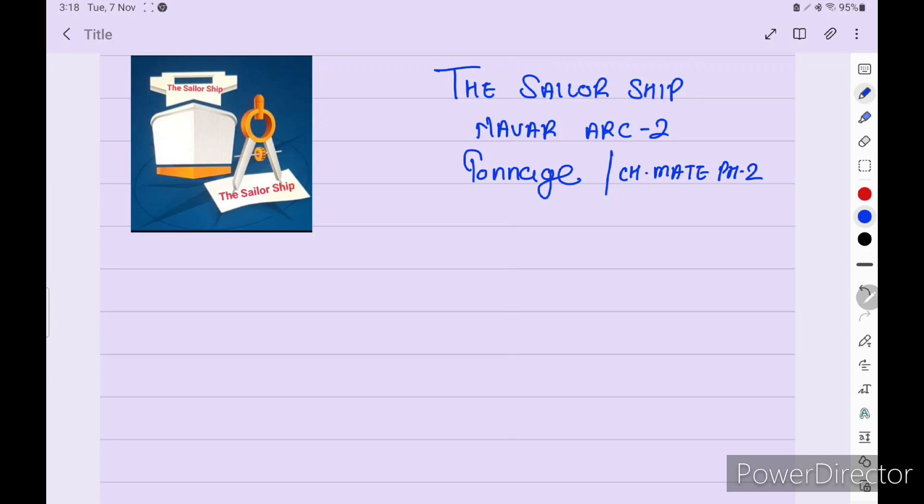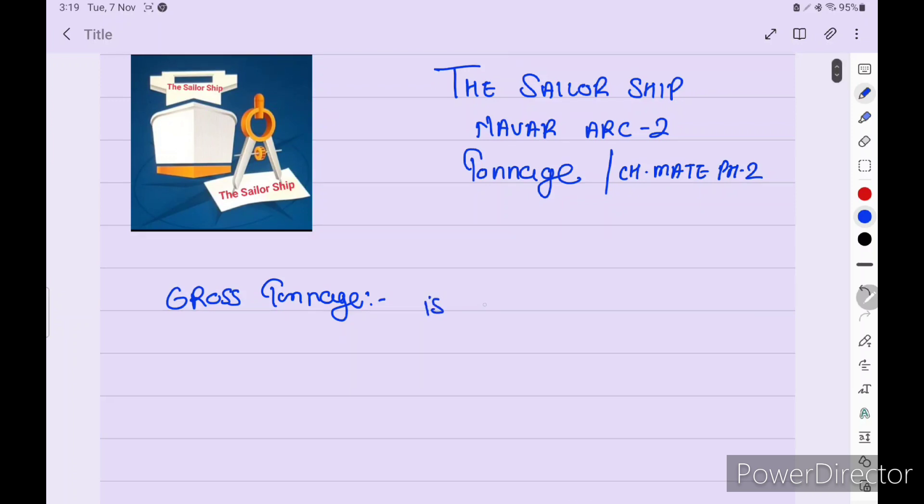Just see, there are two formulas we have to use to solve this numerical. Gross tonnage is the overall size of the ship which is useful. That means all the enclosed space, whatever comes under gross tonnage.